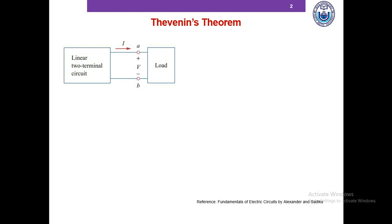It often occurs in practice that a particular element in a circuit is variable while other elements are fixed. The variable element is usually called load. A good example will be a household outlet terminal which may be connected to different appliances at different times — sometimes a computer, a fridge, or any other appliance. Each time you connect a new appliance the resistance changes and the entire circuit has to be reanalyzed all over again.